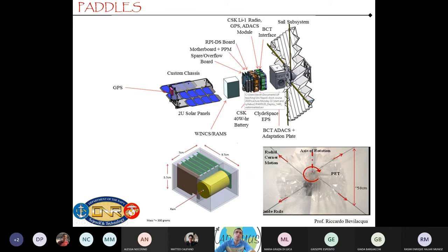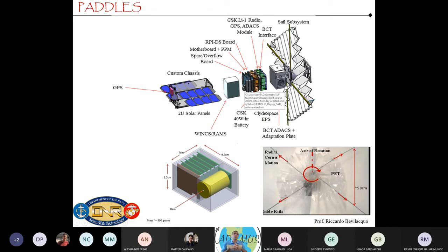The BCT ADACS has a star tracker — a camera that looks at stars and uses software to recognize star patterns and reconstruct which way in space you're pointing. Inside it are three tiny reaction wheels. A reaction wheel has a fixed spin axis, but you can spin it up or slow it down. Augmenting or diminishing the angular momentum of something in your system requires something else in the system to compensate — that's how reaction wheels control attitude.